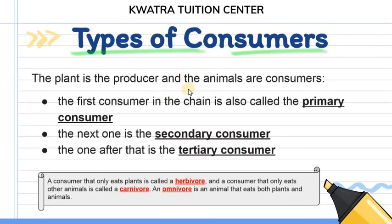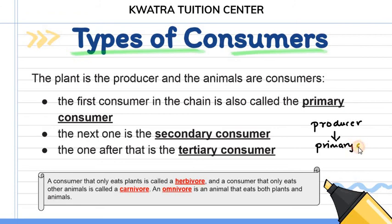That is types of consumers. We have three different types of consumers — namely, primary consumer, secondary consumer, and tertiary consumer. Consumers producer के बाद आते हैं। सबसे पहले producer यानी green plant, then primary consumer, then secondary consumer, then tertiary consumer। Energy producer से start होती है और tertiary consumer तक जाती है।